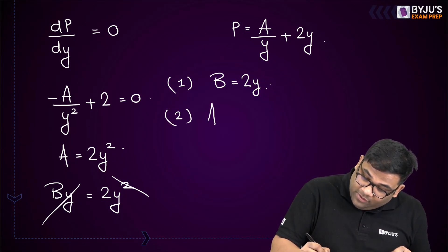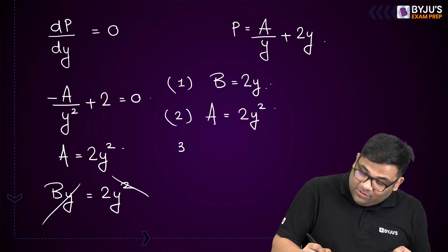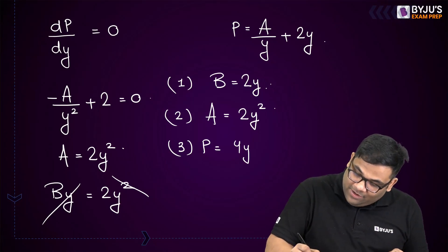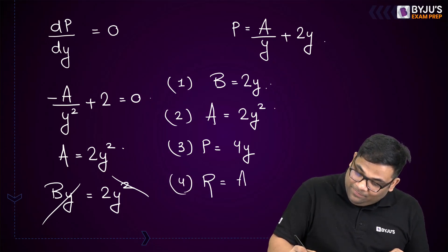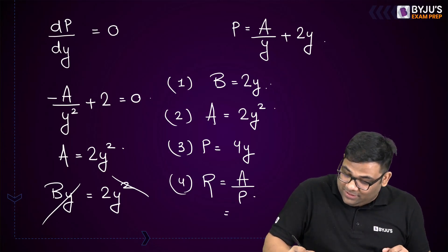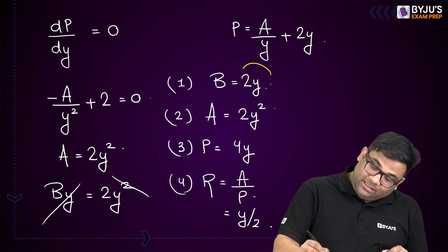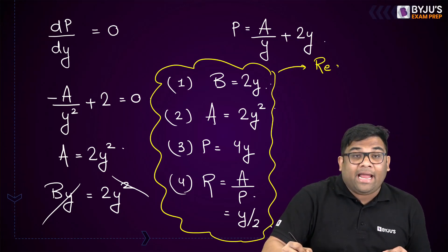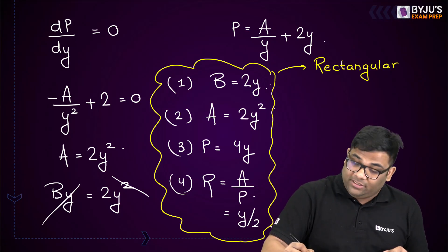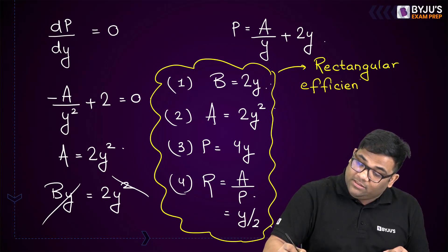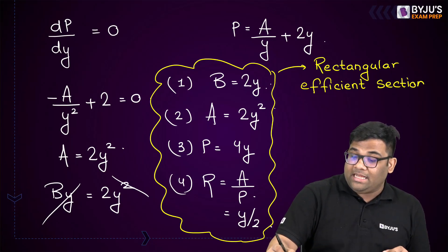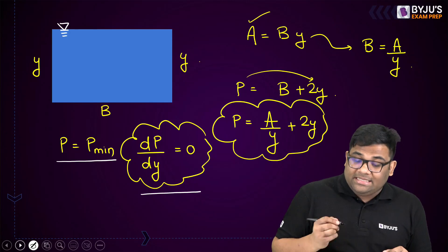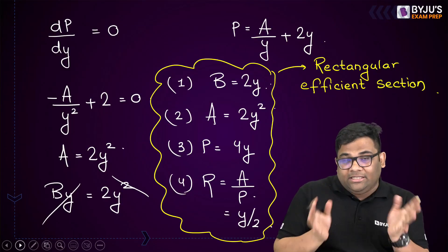The second conclusion: area = 2y². For the third conclusion, wetted perimeter P = b + 2y = 2y + 2y = 4y. The hydraulic radius R = A/P = 2y²/4y = y/2. These are the conclusions for a rectangular efficient section, derived from the condition that to maximize discharge for a constant area, we minimize the wetted perimeter, i.e., dp/dy = 0.